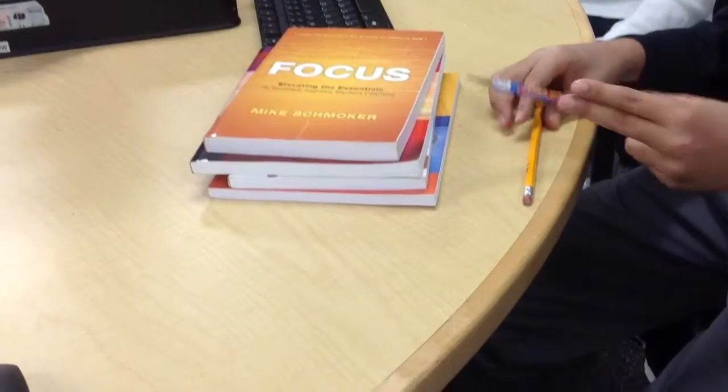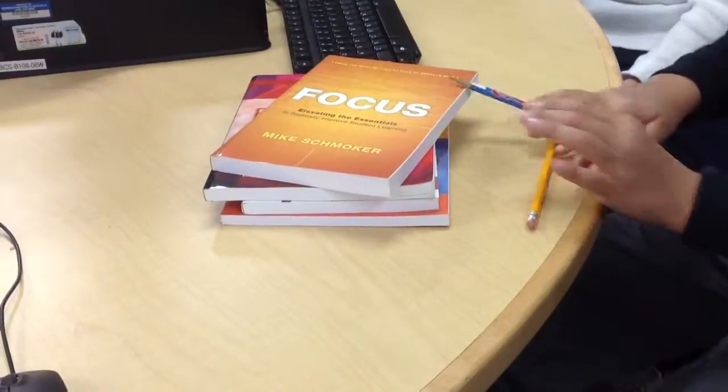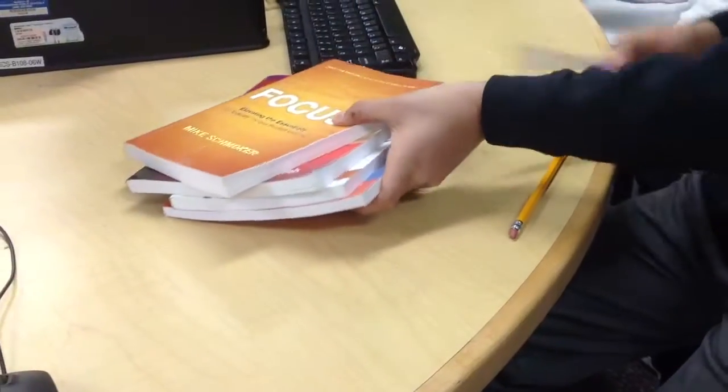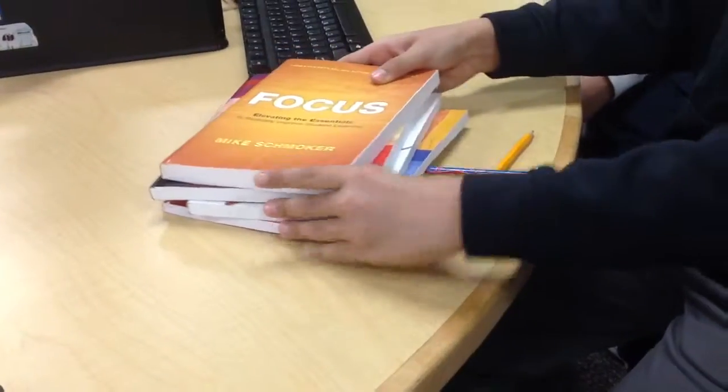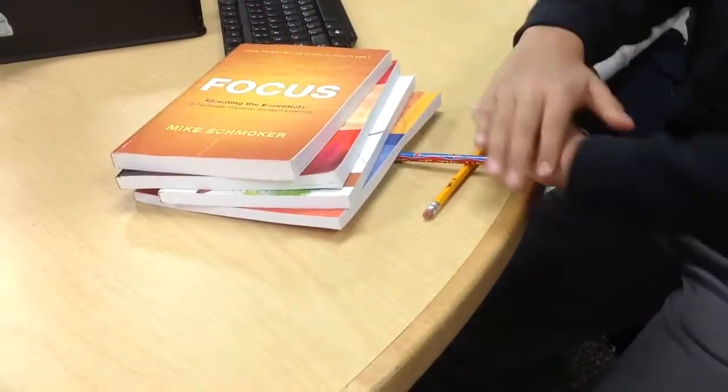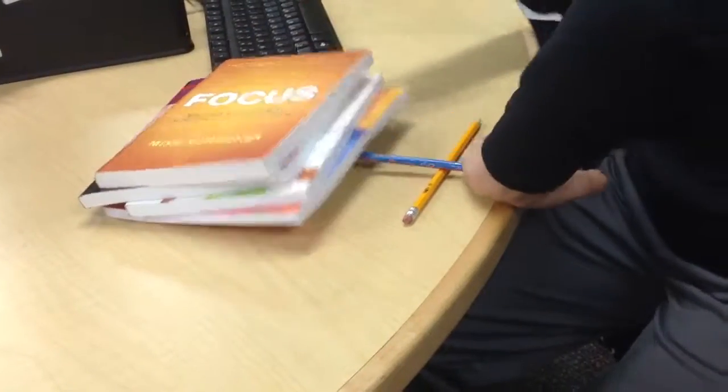One pencil in here, the other pencil in there. We put, we set up the books, put one pencil in there, and we push up the lever to see if we can pull up the books.